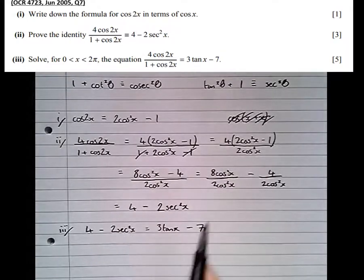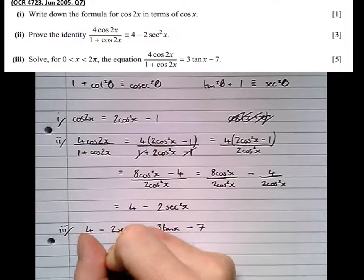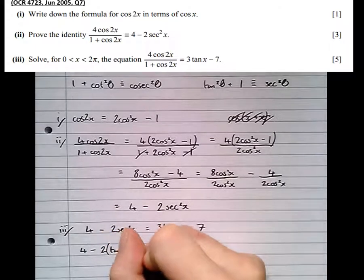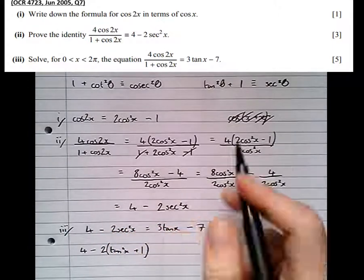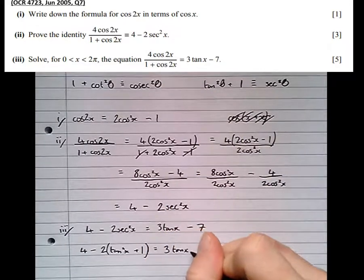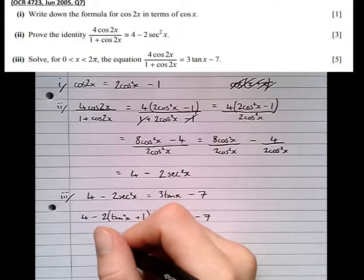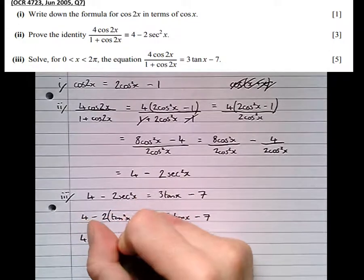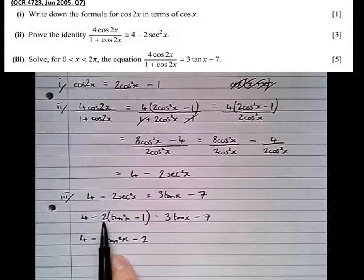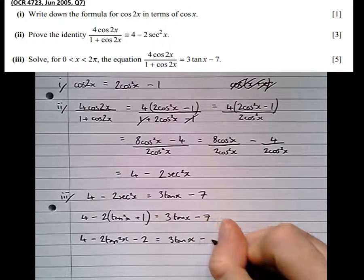So we can see here that sec squared theta is tan squared theta plus 1. So if we replace the sec squared x with tan squared of x plus 1, which this identity allows us to do, that being equal to 3 tan x minus 7, then we can start multiplying it out and treat it like a hidden quadratic. So 4 minus 2 tan squared x minus 2. Don't forget the minus sign at the front. Equals 3 tan x minus 7.